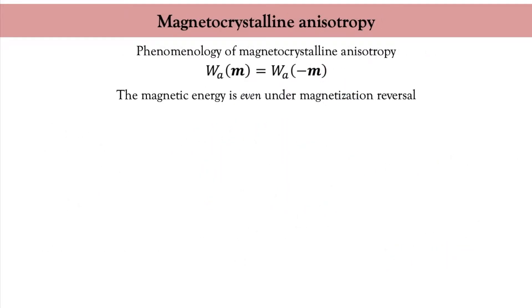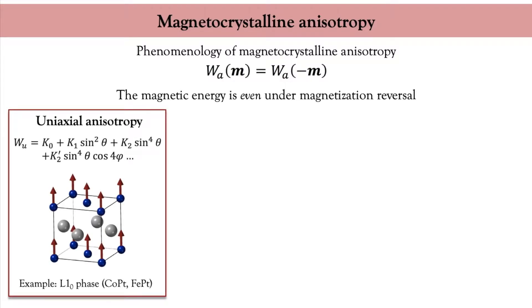Another important energy term is the magnetic anisotropy, coming from the crystalline structure of the magnetic materials. This term is even under magnetization reversal, which means that only terms involving bilinear products of the magnetization components are allowed. You can compute this interaction microscopically or analyze the symmetry of the system to deduce the general form. For a material with axial symmetry, one obtains uniaxial anisotropy, written in terms of θ and φ — the polar and azimuthal angles of the magnetization with respect to the symmetry axis.